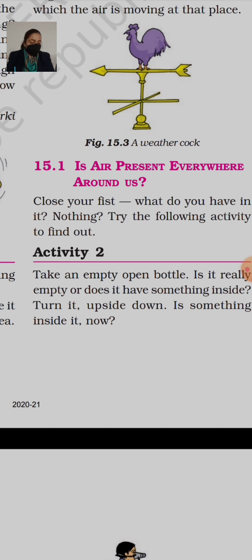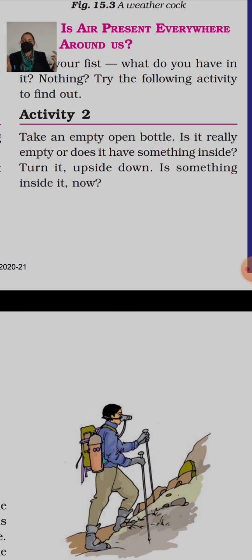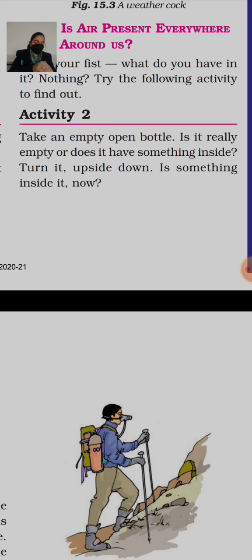Activity 2: take an empty open bottle. Is it really empty or does it have something inside it? Hum ne jo usko ulta kiya — ulta kiya matlab uska jo upar ka dhakkan wala part hai usko niche kiya. Khulli hai, niche dhakkan hai. Tab uske andar kya kuch hai? I don't think so, kuch hai.